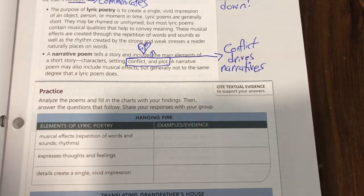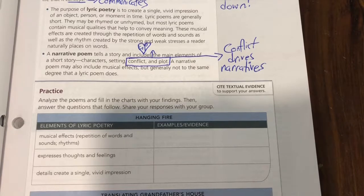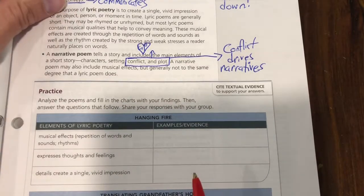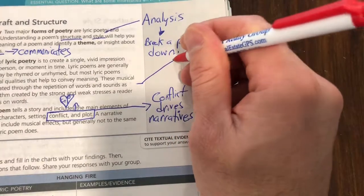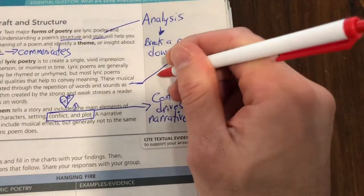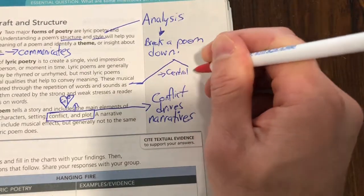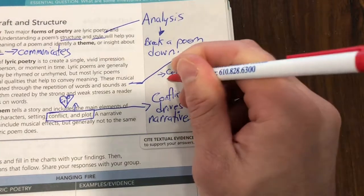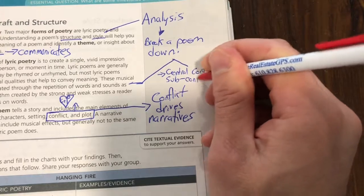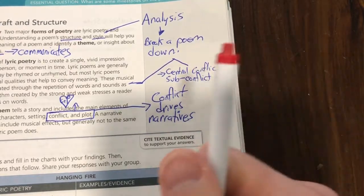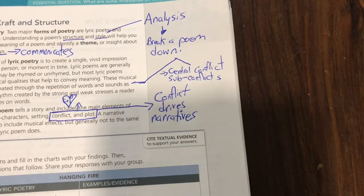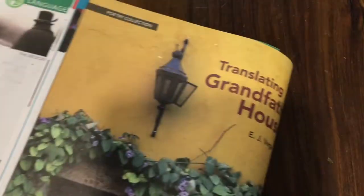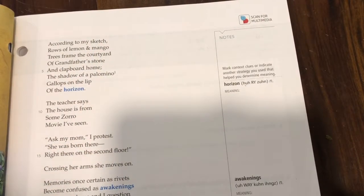Let's take a look at just the conflicts in a narrative poem. When we're looking for conflicts, we're looking for two different types: the main conflict — a lot of people call that the central conflict — and then sub-conflicts. The root meaning is 'under conflict,' conflicts that might be wrapped up in the central conflict but are small conflicts unto themselves. We're going to take a fine-tooth comb through this narrative poem on page 59 called 'Translating Grand.'